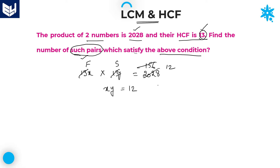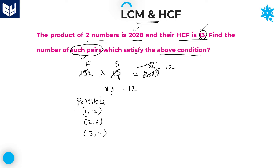Now what you have to do is write all possible values of x and y. It means, product of x and y is 12 — the possible cases are: 1 × 12, which equals 12; next, 2 × 6, which is also 12; and after that, 3 × 4. These are the 3 possible pairs.